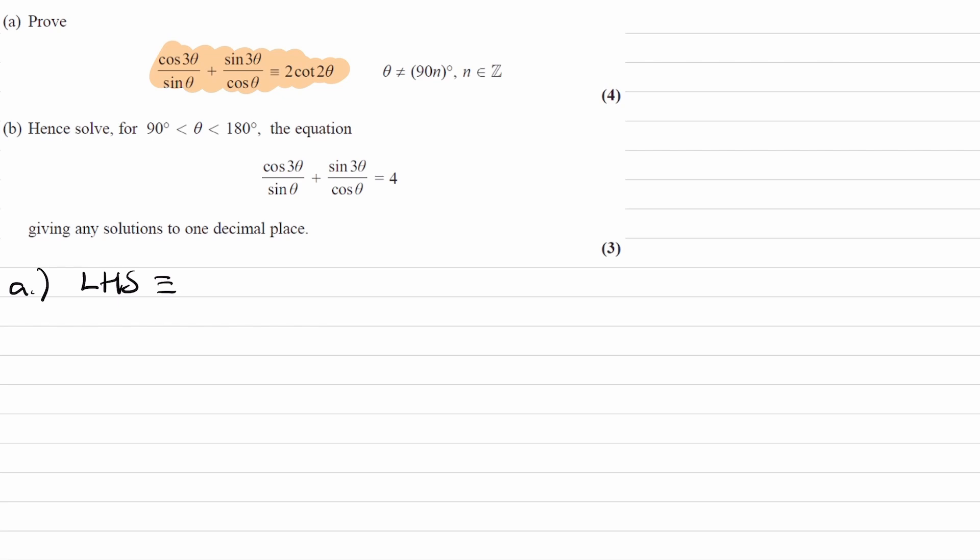So, left-hand side, I'll just rewrite it first of all. As is common with proof questions, the first thing that you often want to do, if you have two fractions added or subtracted, is to combine them to make one fraction.